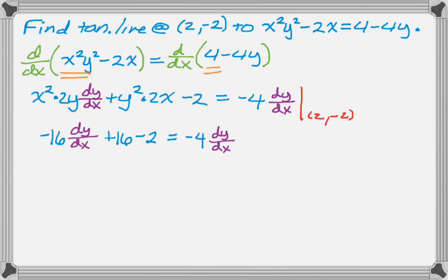And that's so much easier to solve for, so I'm going to solve for dy/dx. Bring everything, all the dy/dx to one side, all the constants to the other, divide through here. So dy/dx is 7 sixths,